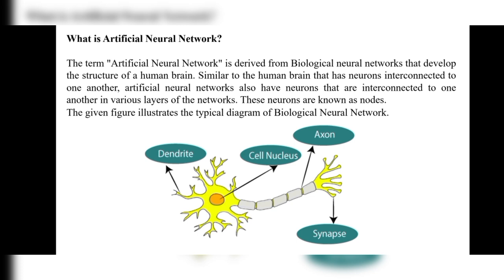The term artificial neural network is derived from biological neural networks that develop the structure of a human brain. Similar to the human brain, which has neurons interconnected to one another, artificial neural networks also have neurons connected to one another in various layers of the network. These neurons are known as nodes.